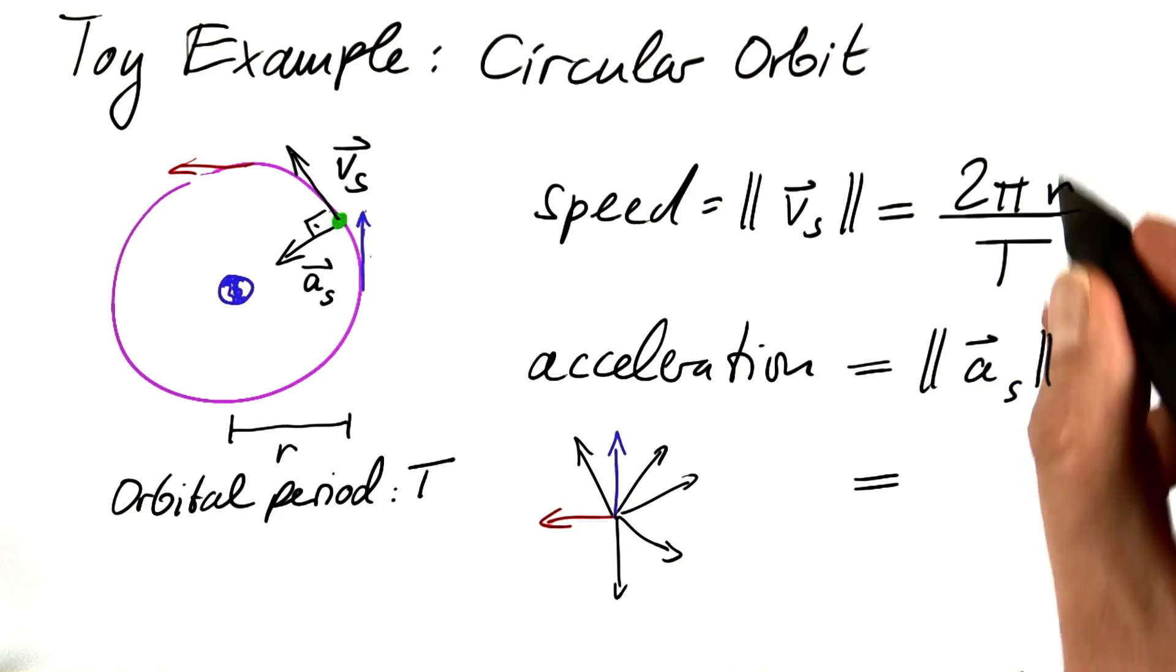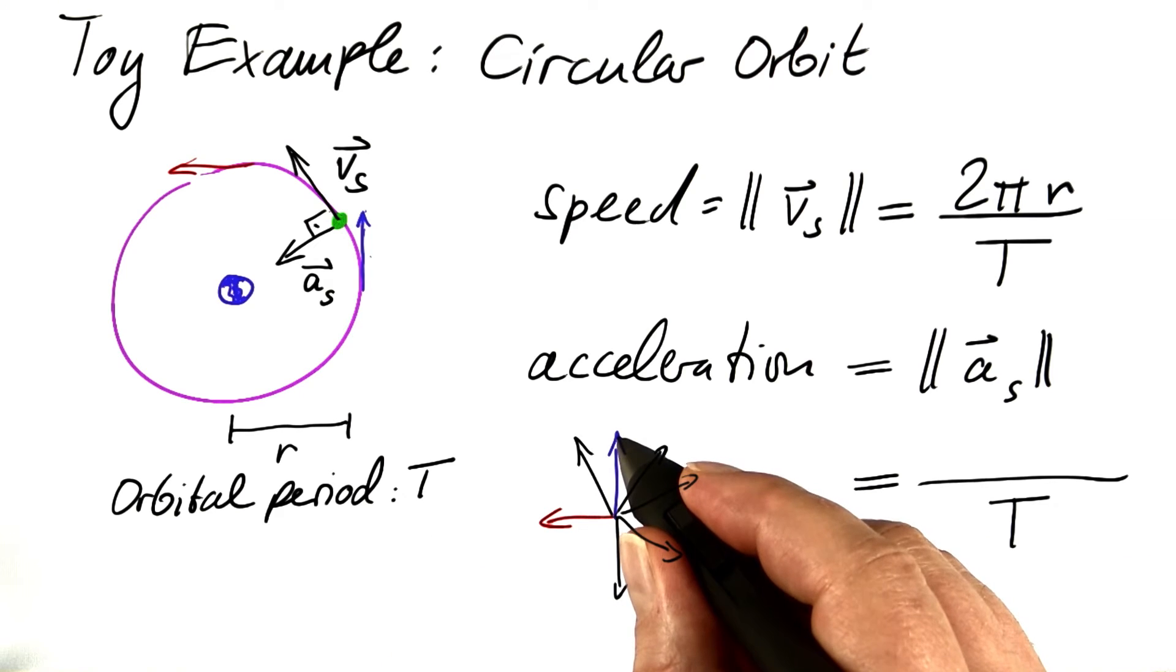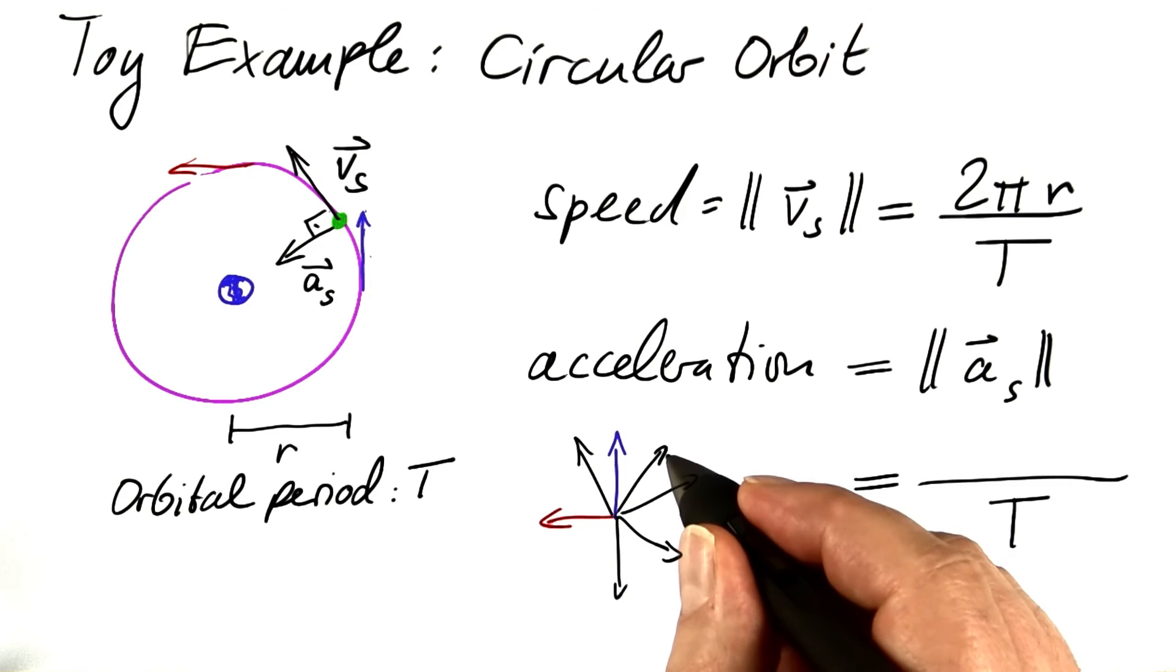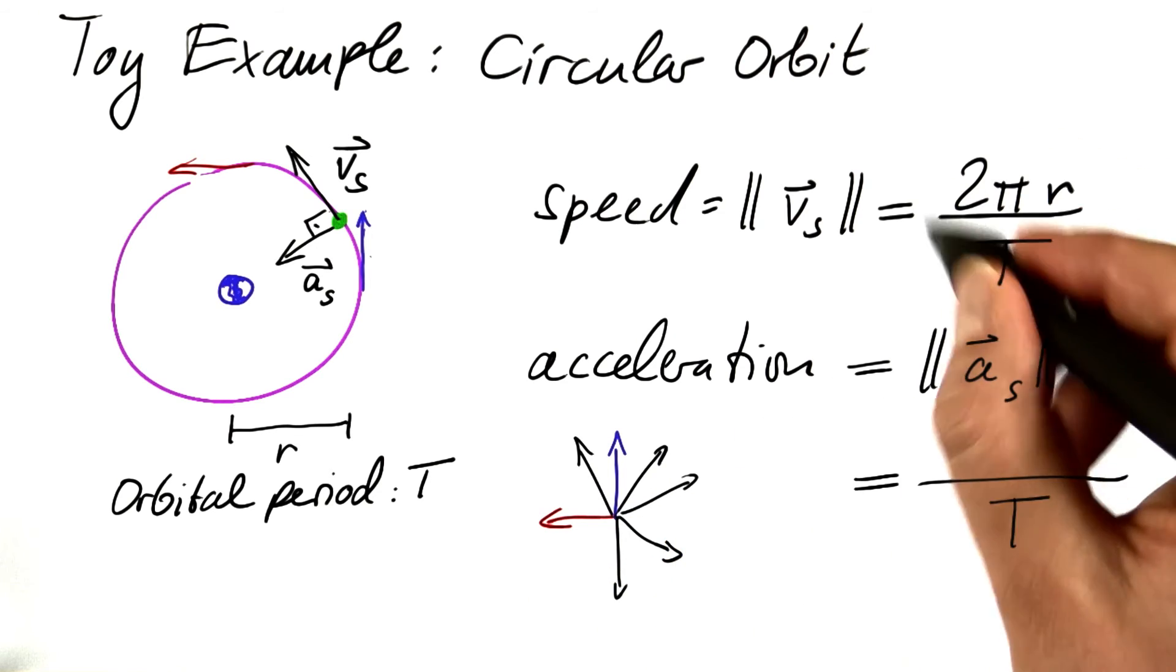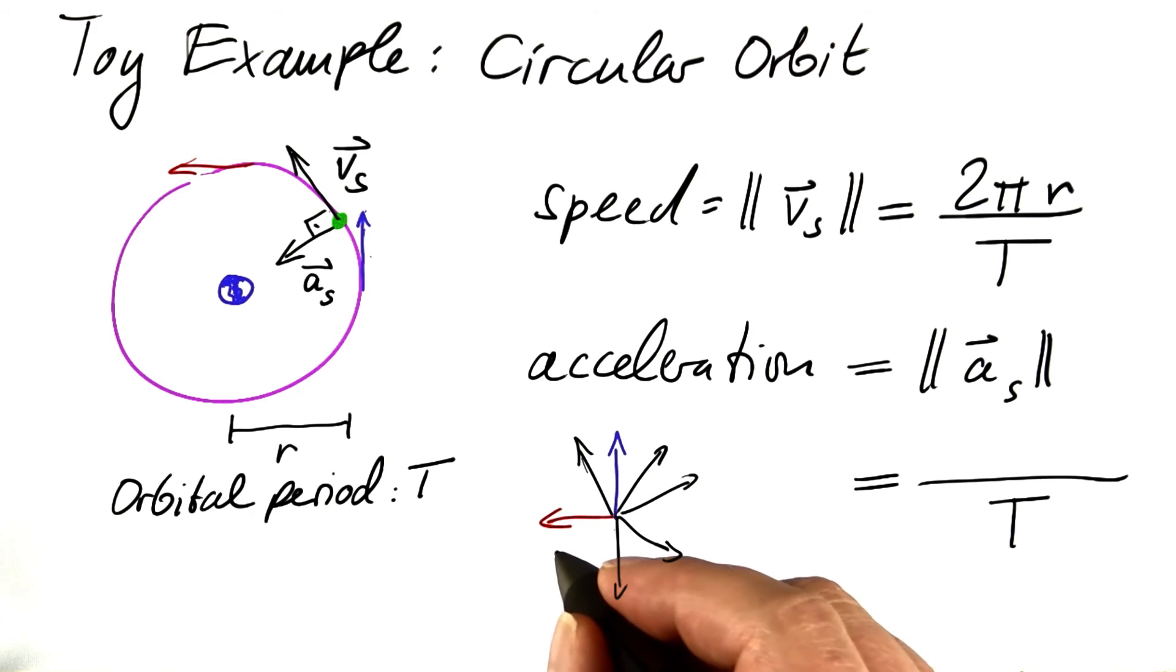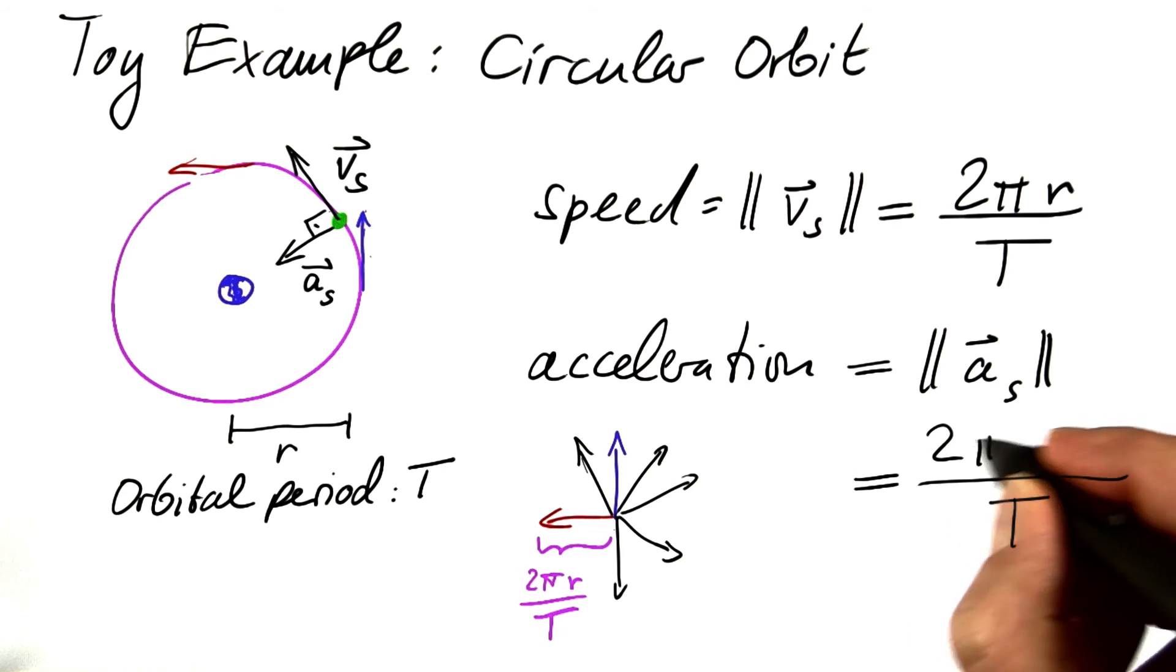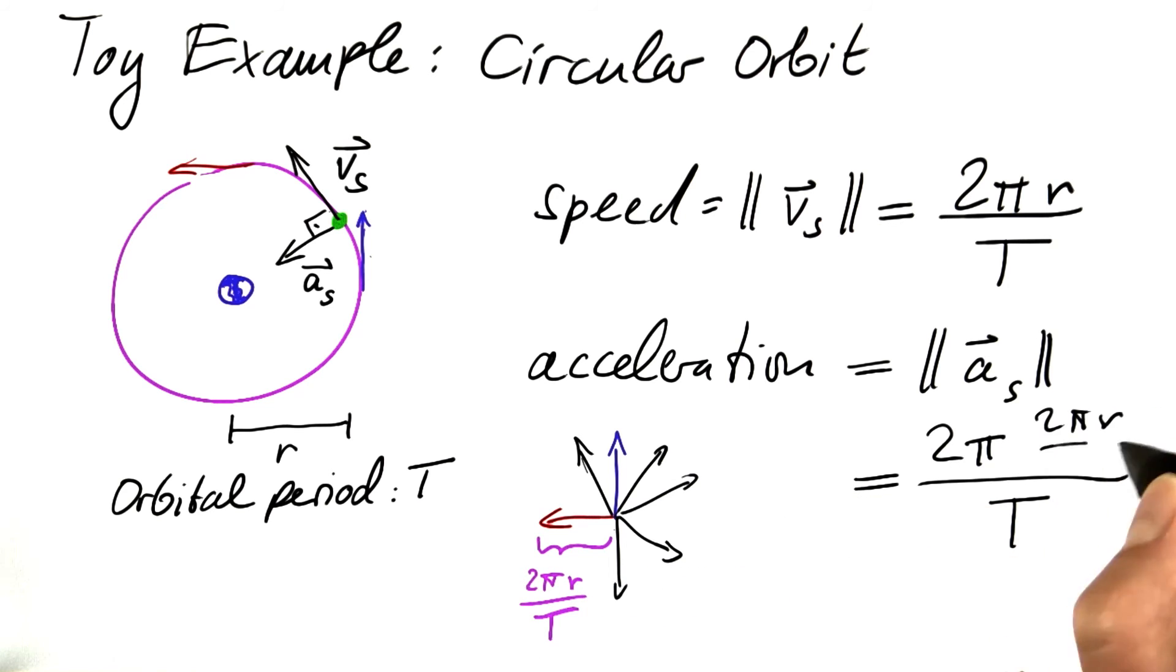Nonetheless, we can still apply the same equation. It takes us one orbital period to make one full revolution, and that has a length of 2π times the speed. All of these vectors have a length of 2πr divided by T, so the circumference would be 2π times this radius, 2πr divided by T, which boils down to 2π²r divided by T².